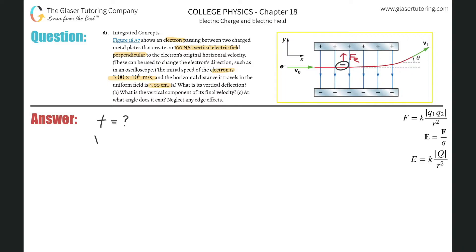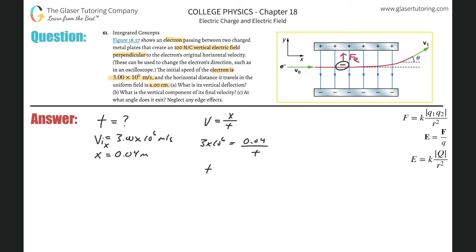We know the horizontal velocity — we'll call that V initial x — and that's 3.00 times 10 to the 6 meters per second. The displacement it's going to move is 4 centimeters, or 0.04 meters. Using the simple velocity formula V equals x over t: 3 times 10 to the 6th equals 0.04 over t. Solving for t gives us 0.04 divided by 3 times 10 to the 6th, which is 1.33 repeating times 10 to the negative 8 seconds. That's how long the electron is in that electric field.